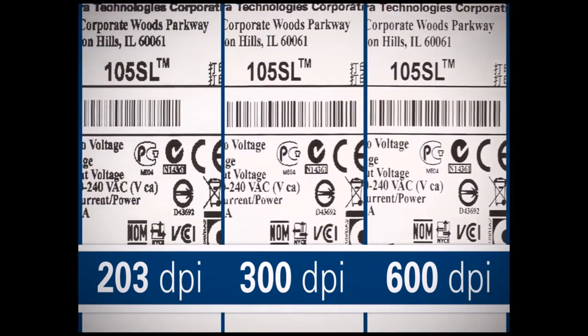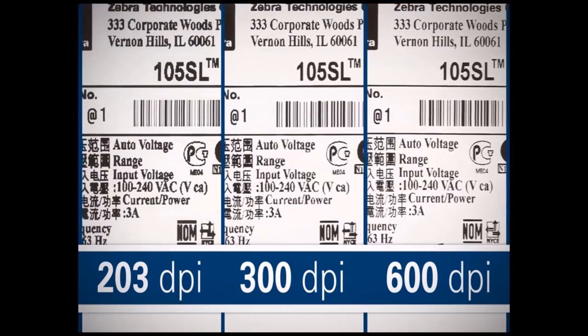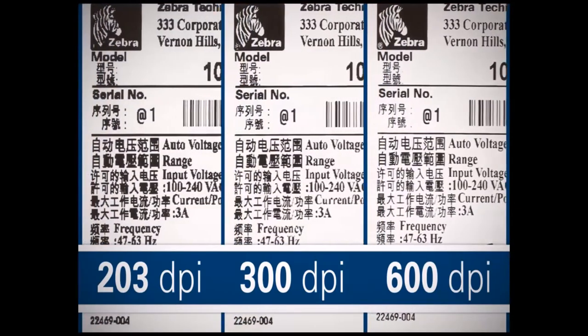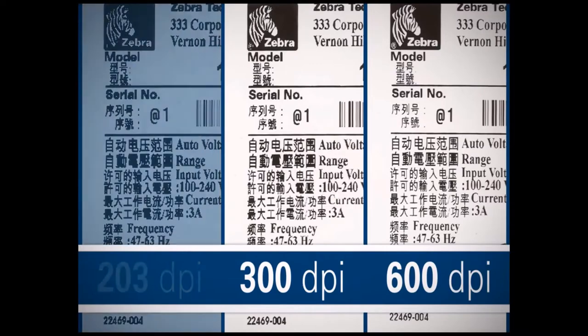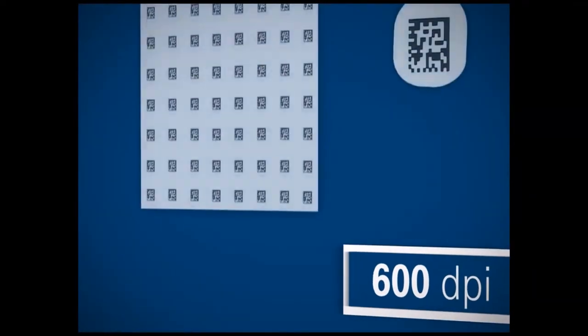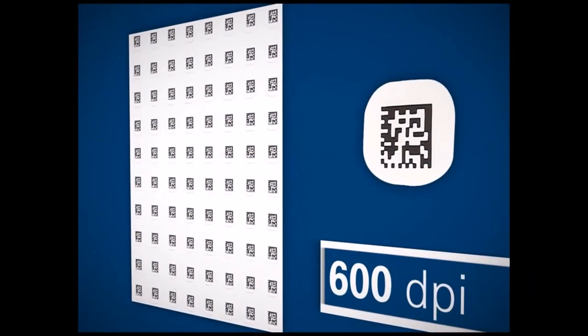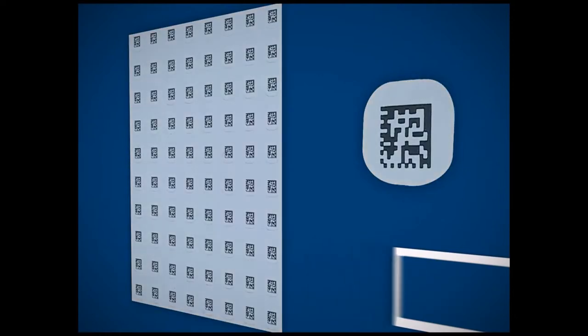600 dpi is also required when printing Asian fonts less than 10 points. 2D barcodes smaller than 3 tenths of an inch by 3 tenths of an inch require a 600 dpi printer to ensure they are scannable.